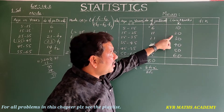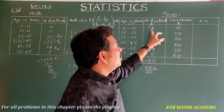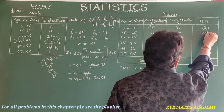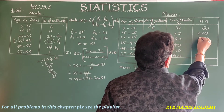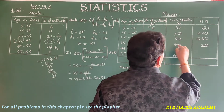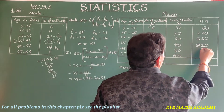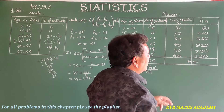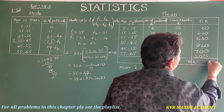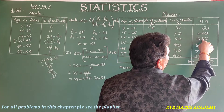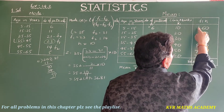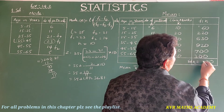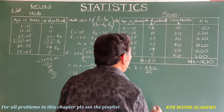Now computing f·xi for each class: 6×10 = 60, 11×20 = 220, 21×30 = 630, 23×40 = 920, 14×50 = 700, 5×60 = 300. Summing these gives Σf·xi = 2830. The total frequency Σf = 6+11+21+23+14+5 = 80.